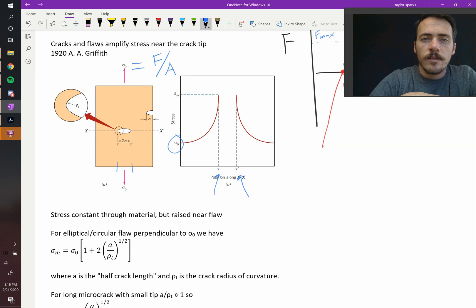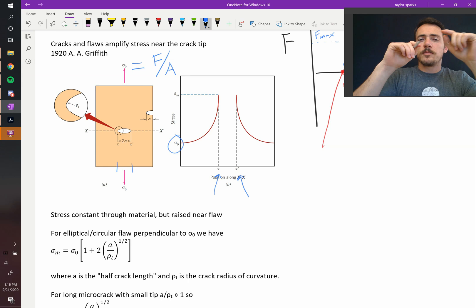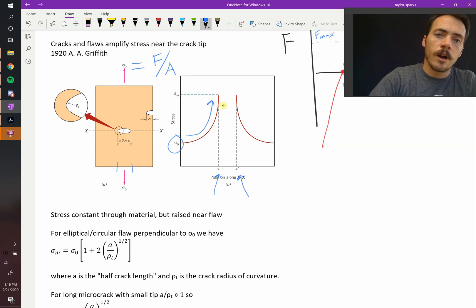This is the stress that you thought you're applying, but as you get close to that flaw, it takes off exponentially. You see this dramatic rise, and at some point, right near the crack tip, you reach sigma M, which is the maximum stress. So right at the tip of the crack, you're going to have the largest stress is essentially the argument here.